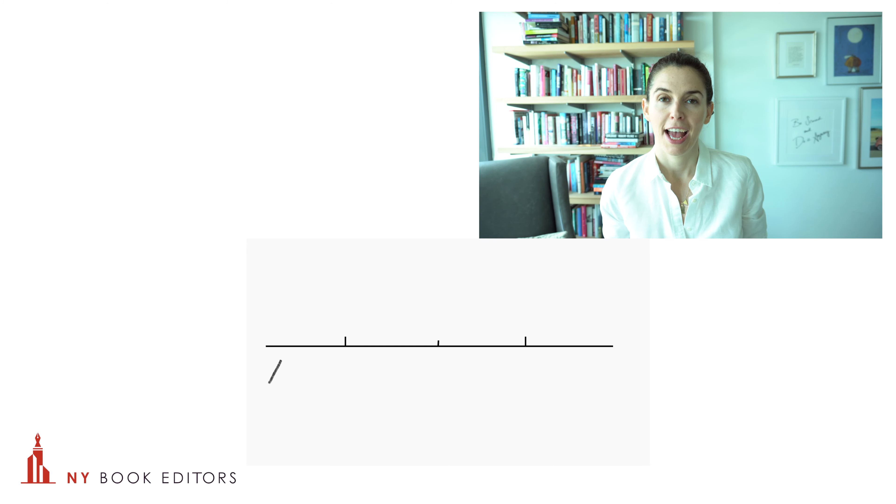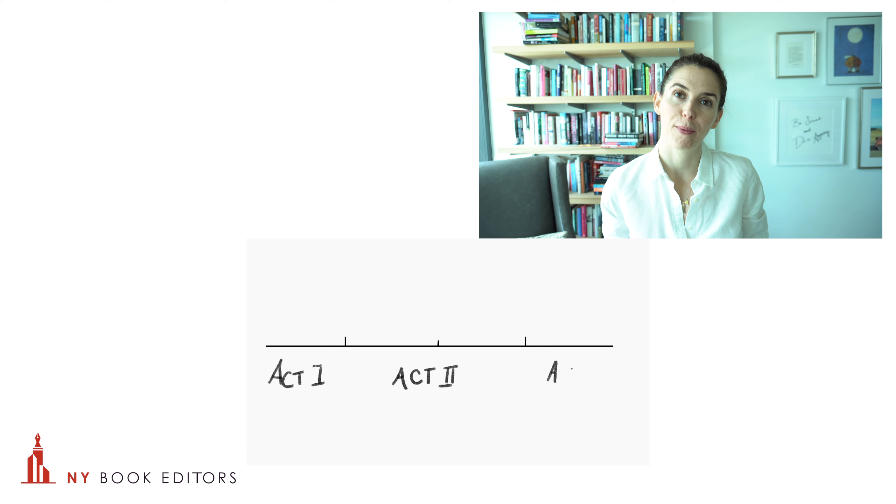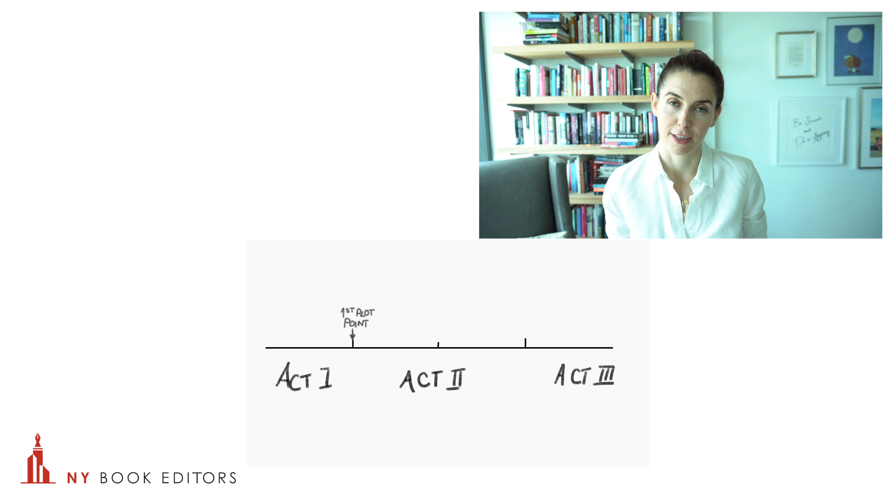The first act shows why the character believes their lie and it strengthens that lie. Then the character must make a decision to leave the normal world — this is the inciting incident in the story arc. At the first plot point, Jane Eyre becomes a governess and moves to Thornfield. It's important to note that I said decision — this should always be a decision on the character's part. It shouldn't just happen to them.